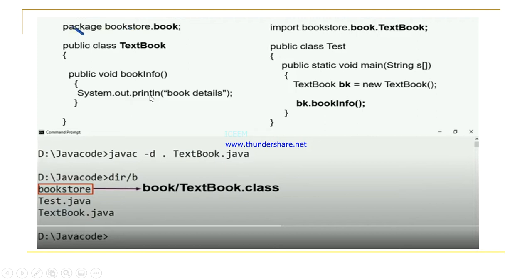In general, when we write a package name we use small letters, and when we write a class name we generally use capital letters starting with an uppercase letter. Here, in package bookstore.book, we create one class called Textbook. In that class we have a simple method void bookInfo(), and we display the information 'book details'. This is a simple creation of one sub-package — the main package is bookstore, the sub-package is book, and in that sub-package we created a class named Textbook with a simple method that displays a message.